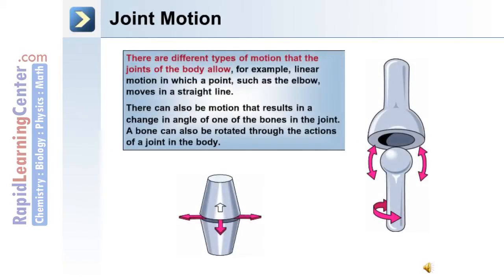There are different types of motion that the joints of the body allow. For example, linear motion in which a point, such as the elbow, moves in a straight line. There can also be motion that results in a change in angle of one of the bones in the joint. A bone can also be rotated through the actions of a joint in the body.